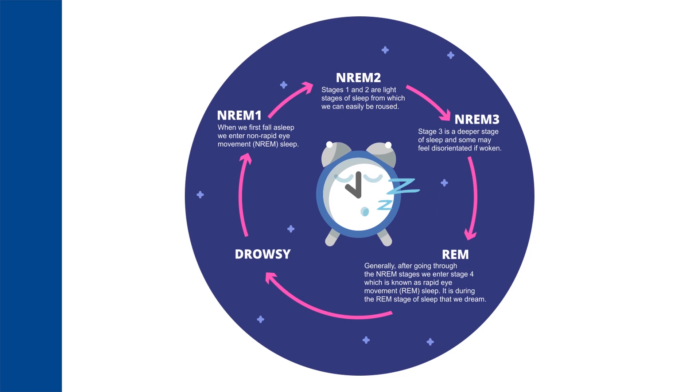From here to rapid eye movement sleep, and this cycle goes on for four to five times through the night.